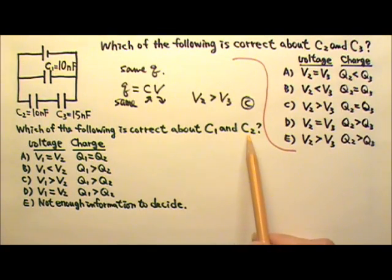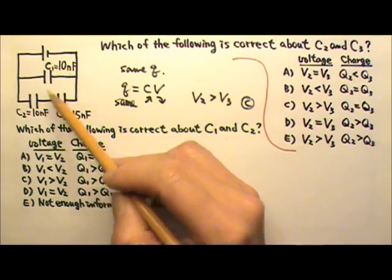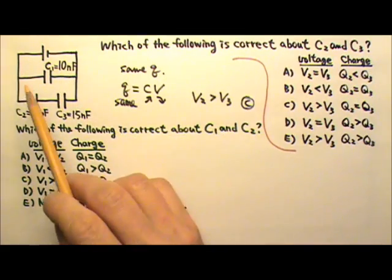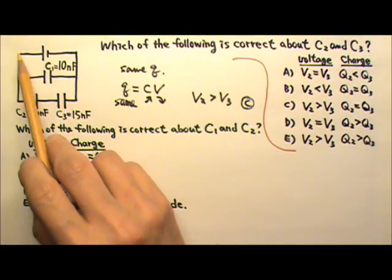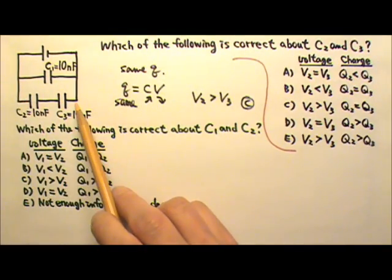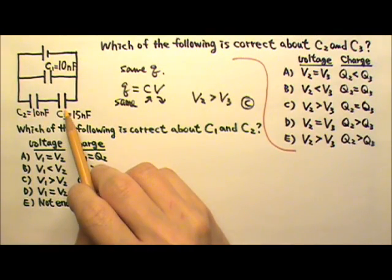This time we are comparing C1 and C2. These two, they have the same capacitance. Because these two segments, they are in parallel with the battery. Which means all three segments, they have the same voltage.